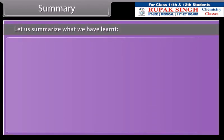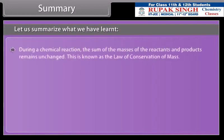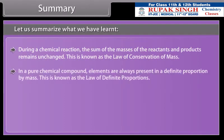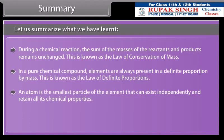Summary. Let us summarize what we have learned. During a chemical reaction, the sum of the masses of the reactants and products remains unchanged. This is known as the law of conservation of mass. In a pure chemical compound, elements are always present in a definite proportion by mass. This is known as the law of definite proportions. An atom is the smallest particle of the element that can exist independently and retain all its chemical properties.